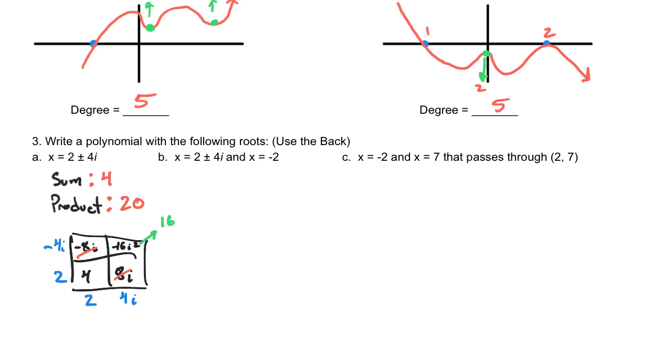Once you have that, writing the quadratic is pretty straightforward if you know the rule. So, x squared is just going to be a 1x squared. It's the opposite of the sum times x, and then just plus the product, and there you're done. So, that is the quadratic equation that gets you the sum and product.